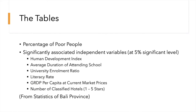To generate the thematic maps, several tabular data are required, which in this case are obtained from statistics of Bali province. The first tabular data is the percentage of poor people by regency and municipality in Bali. Several variables that are assumed to have an association with the poverty incidence are tested by using regression slope tests. The significantly associated variables at 5% significant level are human development index, average duration of attending school, university enrollment ratio, literacy rate, GRDP per capita at current market prices, and number of classified hotels.